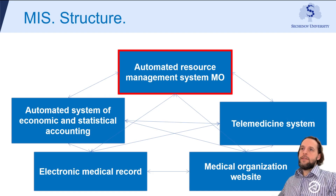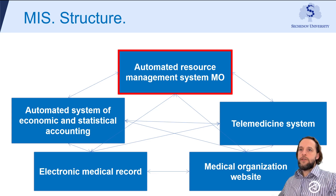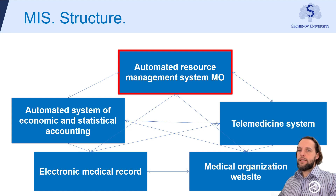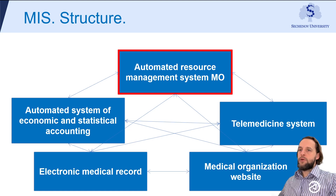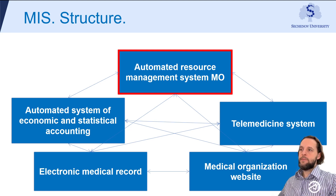The major parts of a medical information system are resource management, telemedicine subsystems, economical systems, statistical systems, electronic medical records, and a patient portal enabling patients to access resources in the system.